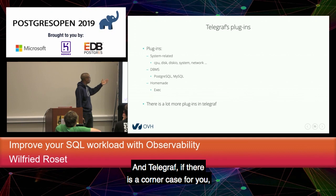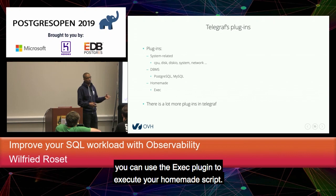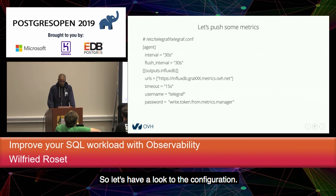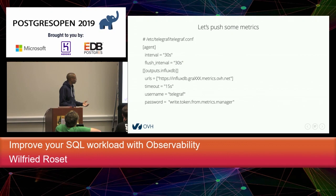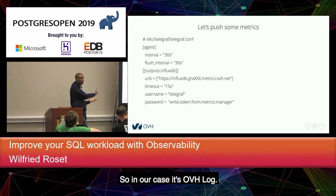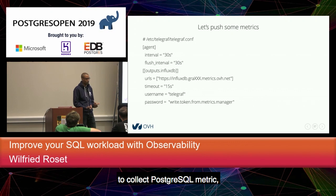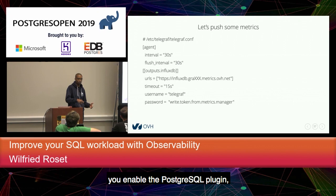If there's a corner case for you, you can use the exec plugin to execute your homemade script, and there are many more plugins available on their GitHub. The Telegraf configuration is simple: you define the frequency, define the output — in our case OVH Metrics with user and password — and then enable all the plugins you need. To collect PostgreSQL metrics, you enable the PostgreSQL plugin, configure the user, password, and connection details, and that's it.